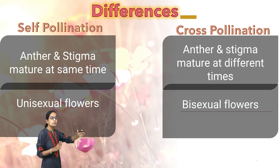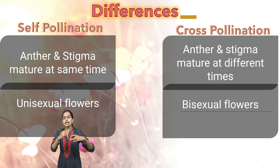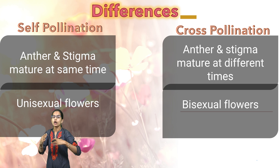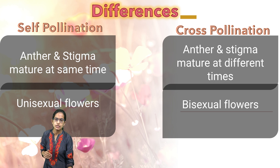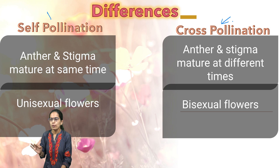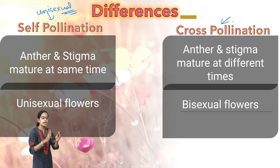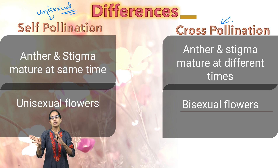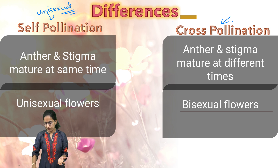However, in cross-pollination, the time at which the anther and the stigma mature is different. Cross-pollination is seen in bisexual flowers, while self-pollination is usually seen in unisexual flowers — though there can be exceptions where the flower has both male and female reproductive parts as different flowers.